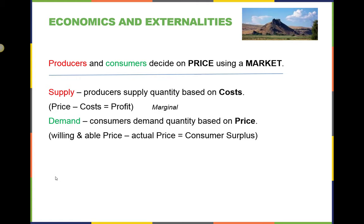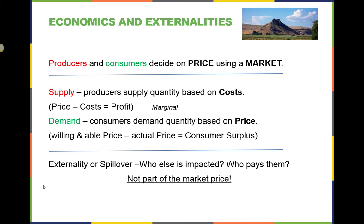Externalities, also called spillover, are the impacts that market transactions have on others who are not part of the transaction. For example, if a farmer pays for a crop duster to spray insecticide on their crops, that is a market transaction. The externality comes when a beekeeper's bees are impacted by their insecticide. Perhaps others are impacted by the spraying or insecticide as well. Who will pay the costs associated with the externalities? These costs are not part of the negotiated or original market price between the producer and the consumer.